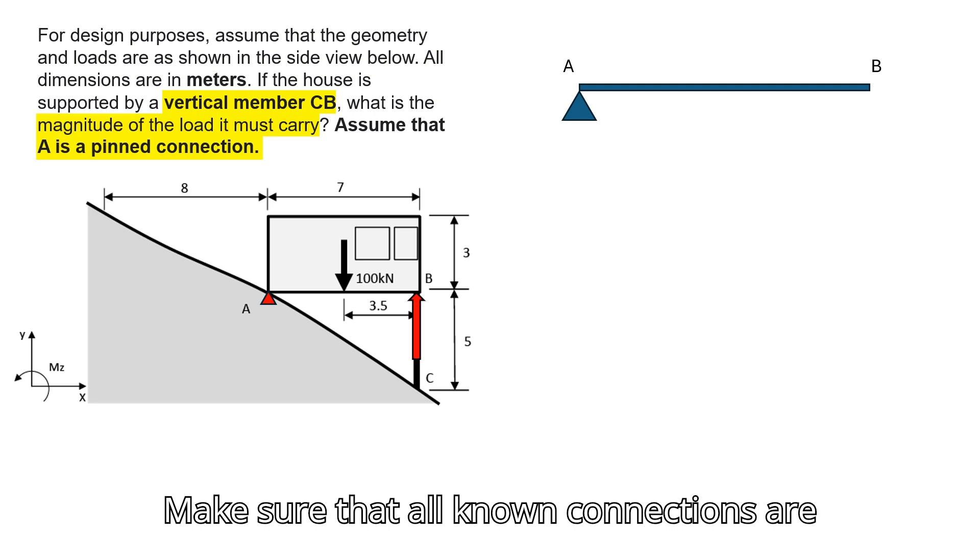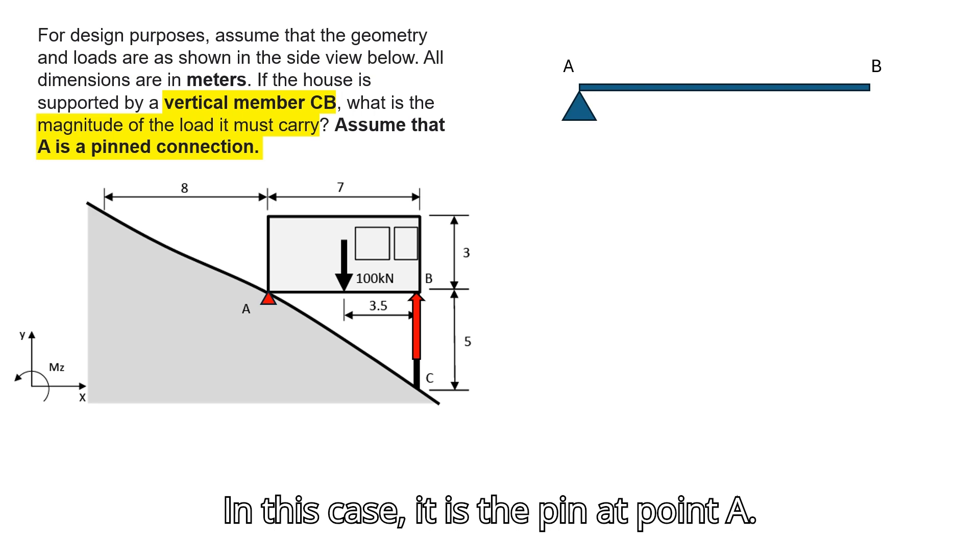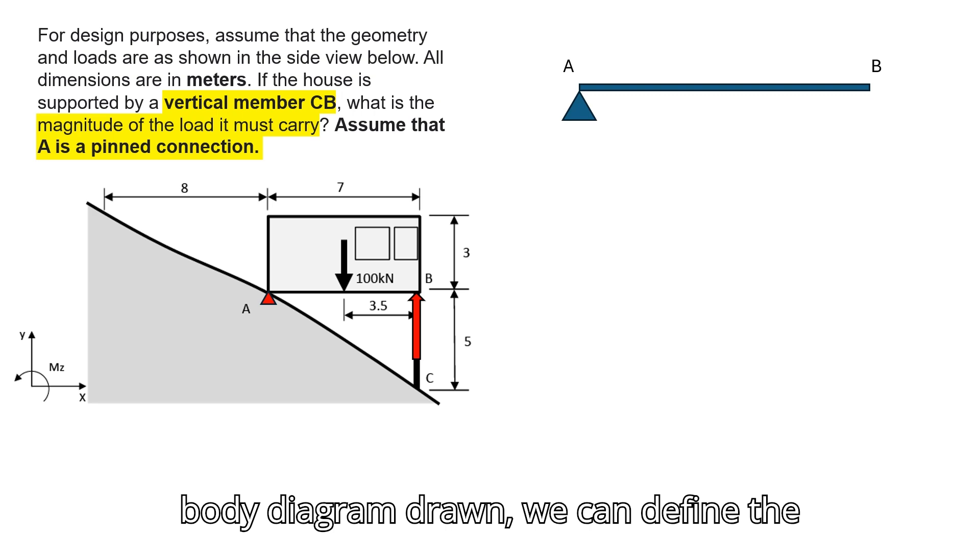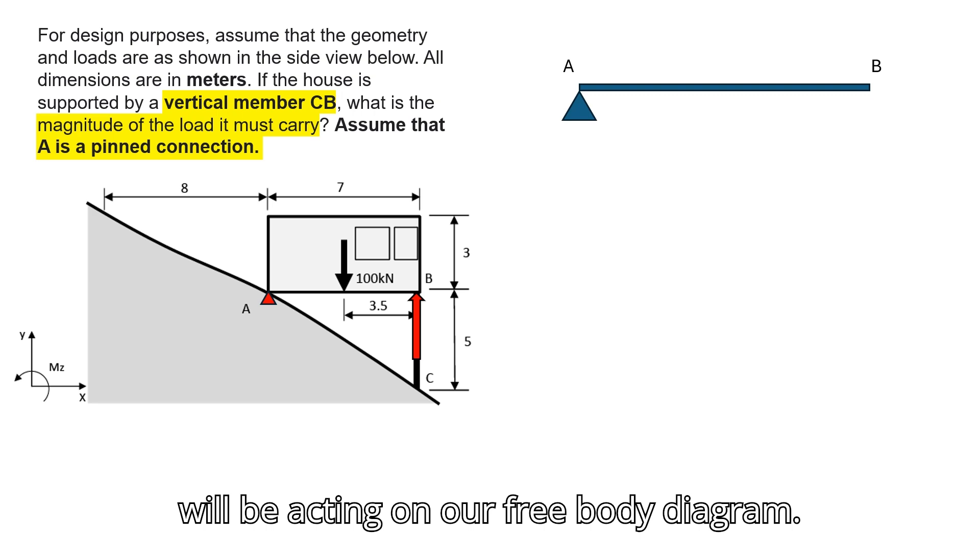Make sure that all known connections are shown in the free body diagram. In this case, it is the pin at point A. Now that we have the basics of our free body diagram drawn, we can define the members and locations of the forces that will be acting on our free body diagram.